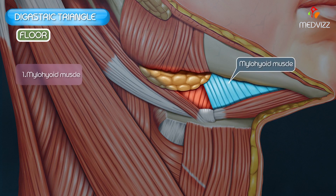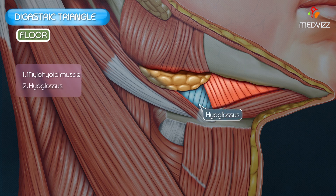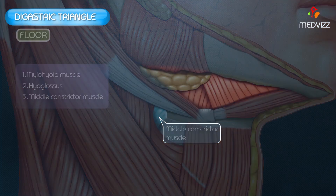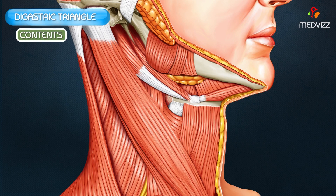The floor is formed by the mylohyoid muscle anteriorly and by the hyoglossus muscle posteriorly. A small part of the middle constrictor muscle of the pharynx also appears in the floor. Now let us talk about the contents of the triangle.